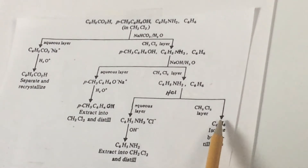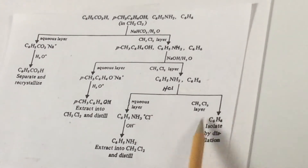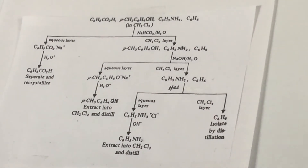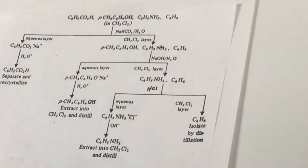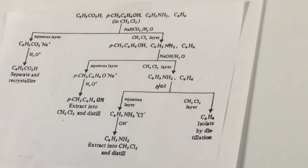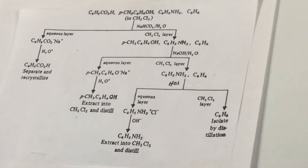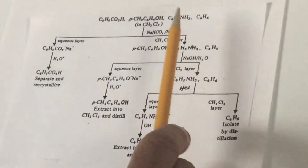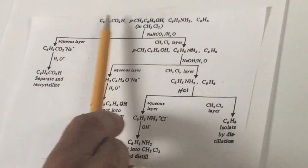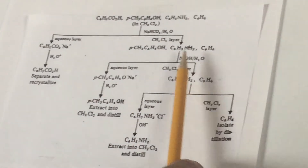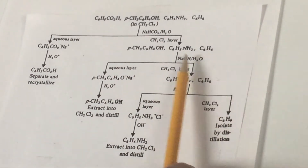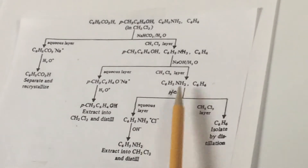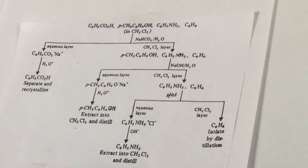We can evaporate off the ether and then isolate the benzene by itself. So as you can see, we got four compounds and we were able to separate each one. Just to quickly review: sodium bicarbonate is used to separate the acids, sodium hydroxide separates the phenols, and acid is used to separate out the amine.